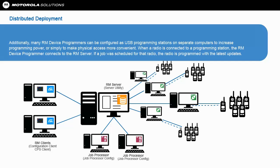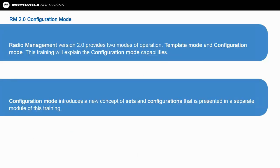When a radio is connected to a programming station, the RM device programmer connects to the RM server. If a job was scheduled for that radio, the radio is programmed with the latest updates. Radio Management version 2.0 provides two modes of operation: template mode and configuration mode. This training will explain the configuration mode capabilities. Configuration mode introduces a new concept of sets and configurations that is presented in a separate module of this training.